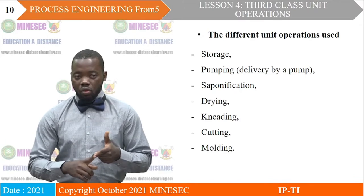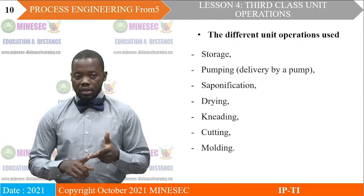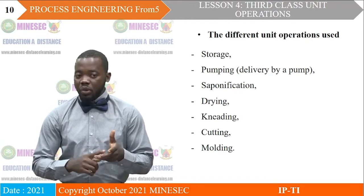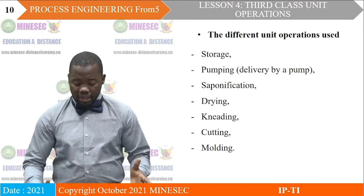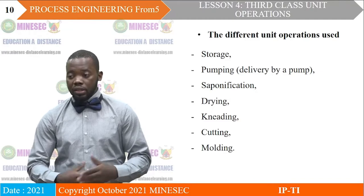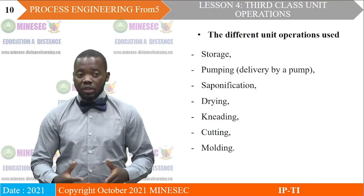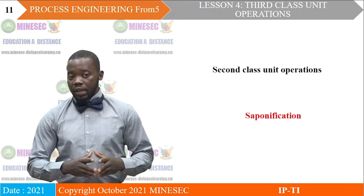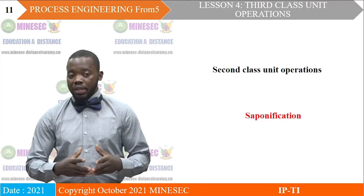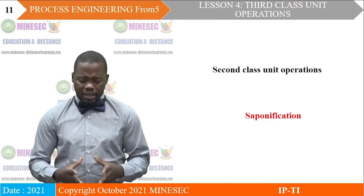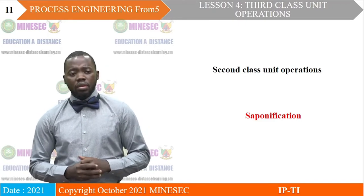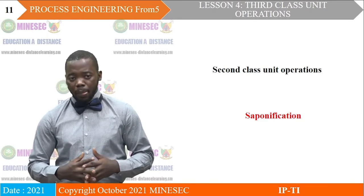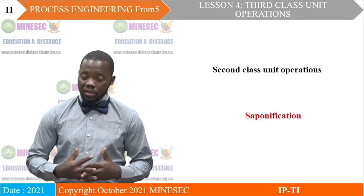Drying is not a reaction — it is just a process of eliminating water molecules. Kneading is a process of transporting; cutting is size reduction; and molding. So from all these, we can see that we have only one operation associated with transformation, with a reaction, and that is saponification. Therefore, the only second-class unit operation we can identify from this text is saponification. We hope that you had saponification — if that's the case, it means you've understood lesson three correctly.